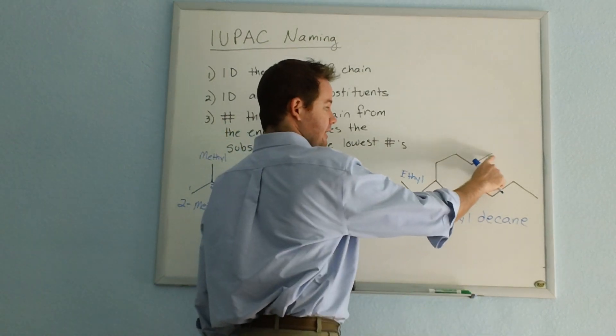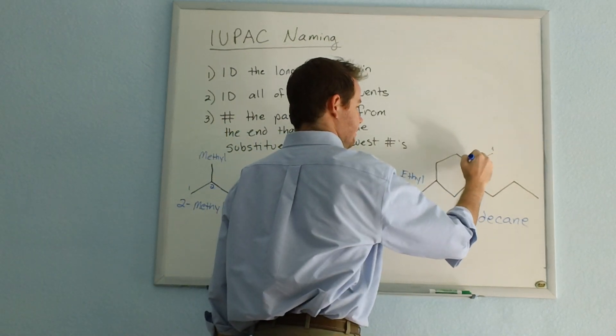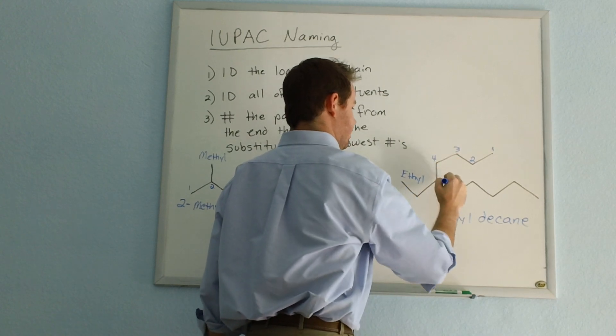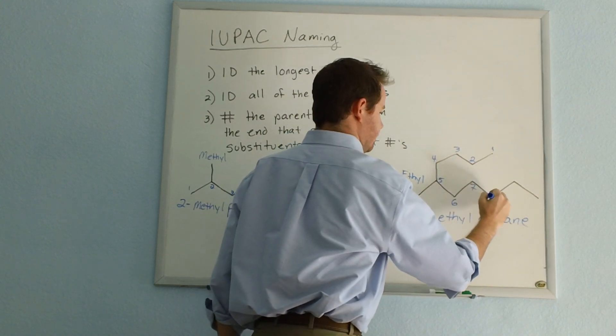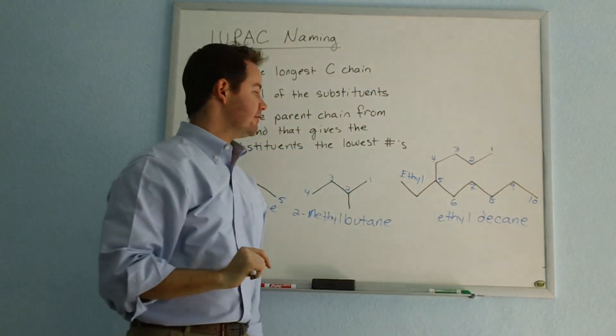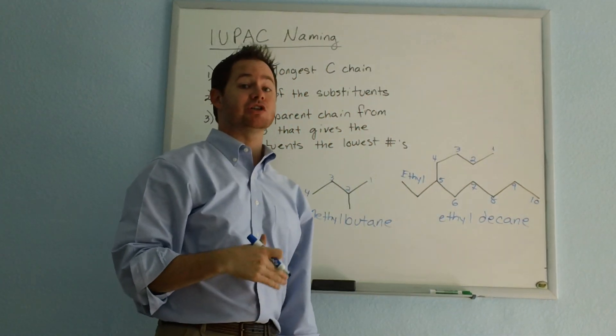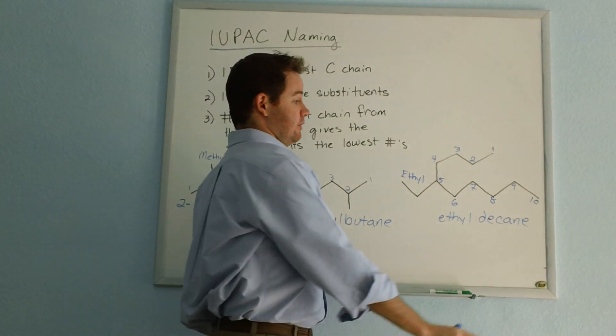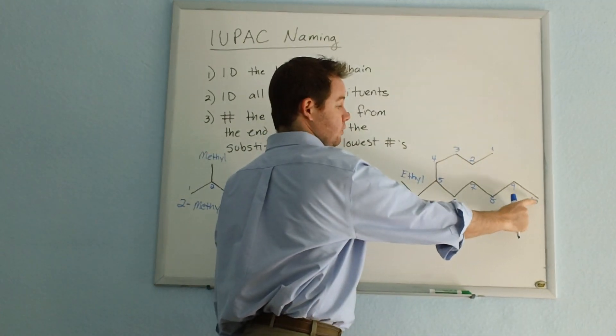When numbering from this end, we get five as the number where this ethyl group branches off of our parent chain. And that is lower than if we start from here. In which case, one, two,